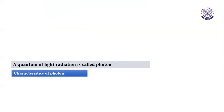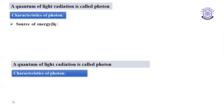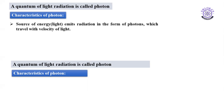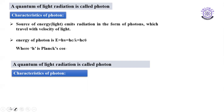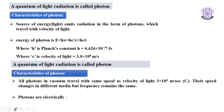A quantum of light radiation is called a photon. Any hot body or black body emits radiations not continuously but discontinuously. Being a radiation, it is associated with some energy — small packets of energy, which are called quanta (plural) or quantum (singular).